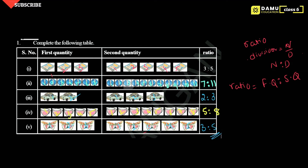Like this we have to write. Ratio is nothing but we took first quantity to the next quantity. Ratio will be denoted with 'is to' and pronounced as 'is to'.